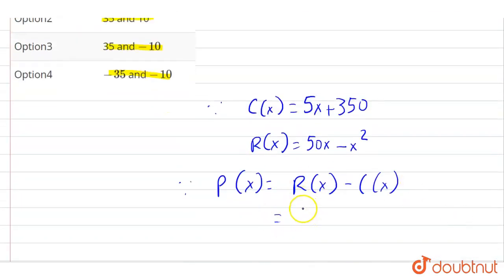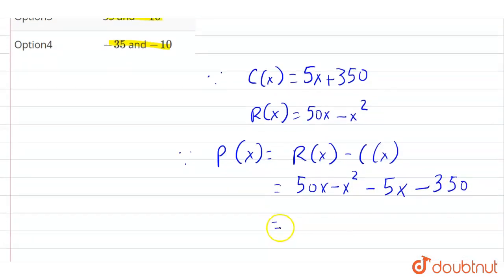So total revenue function is 50x minus x squared minus C(x), that is 5x plus, and minus minus plus is minus 350. So this will be 50x minus 5x is 45x minus x squared minus 350.